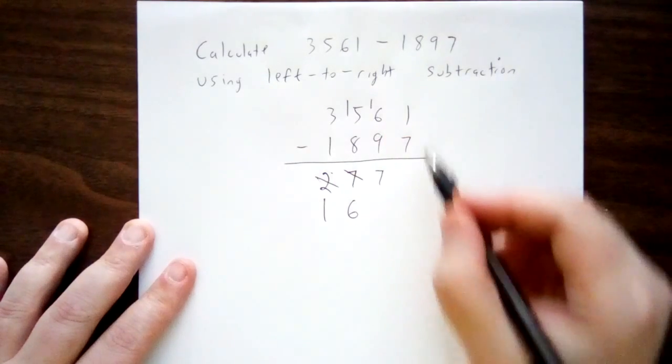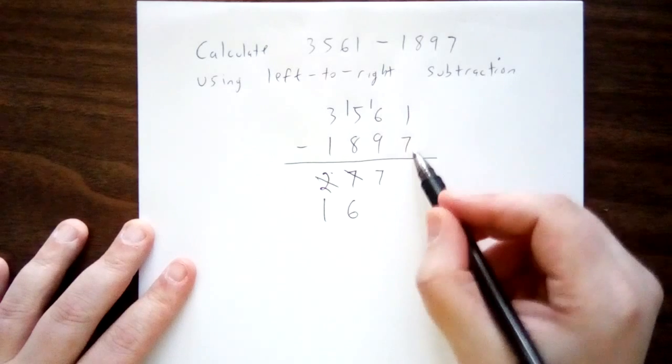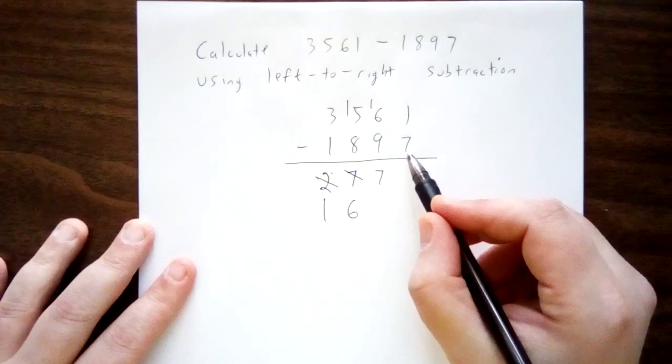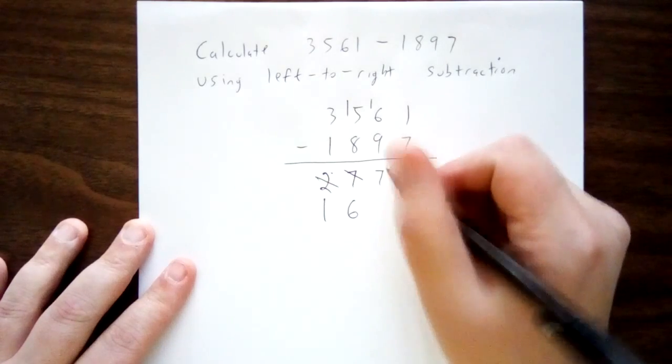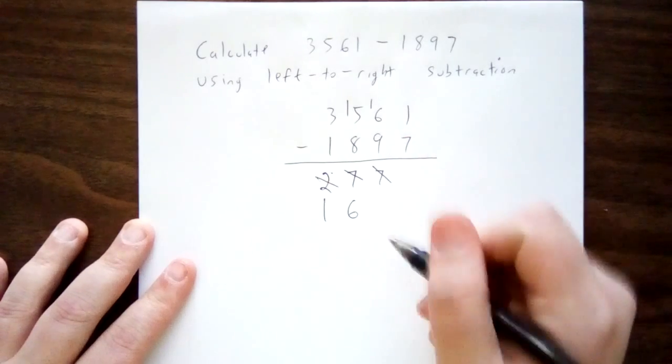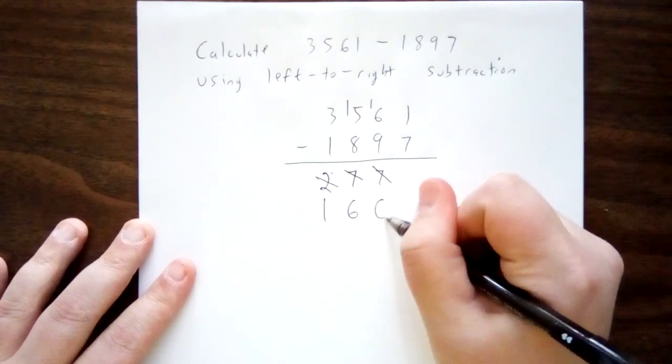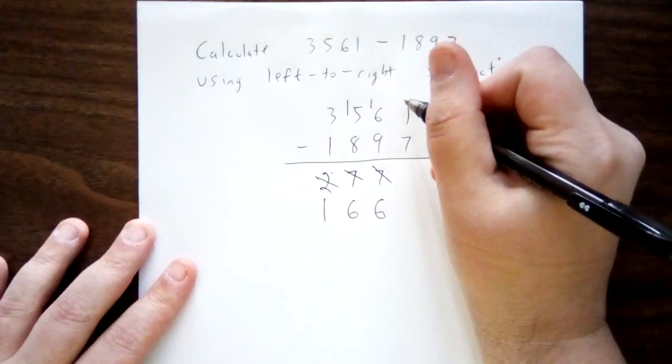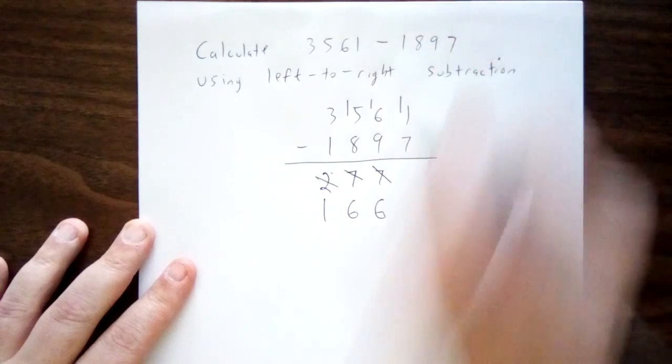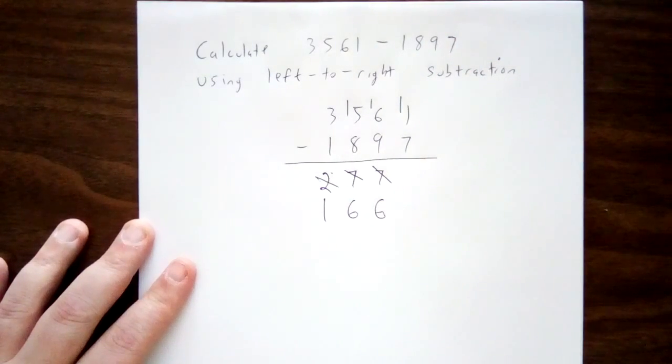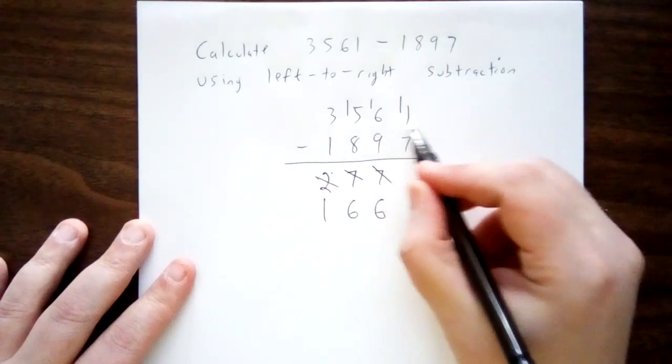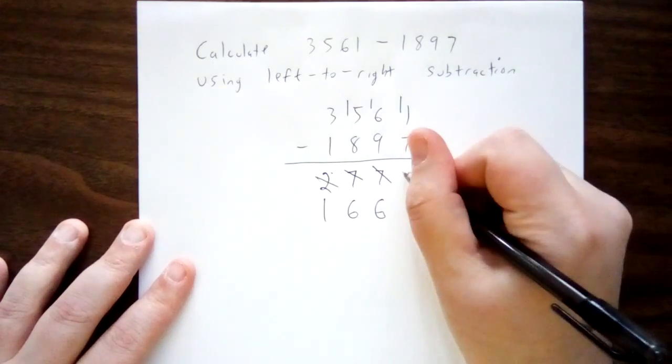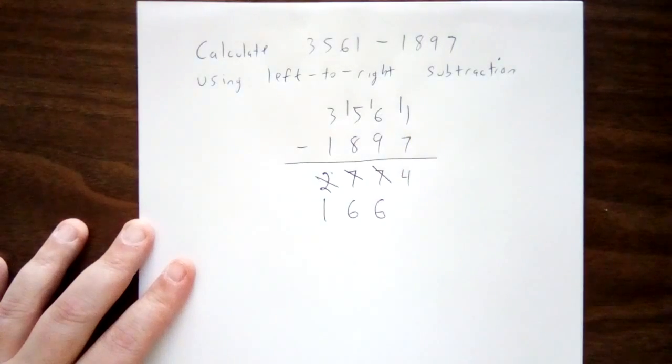And in the ones place, I have 1, and I'd like to remove 7. Again, I can't do that quite yet, so I'll need to borrow from the difference that I've already calculated. From the 7 tens that I have left over, I'll take 1 of them away, reducing it to 6 tens. That 1 ten that I've borrowed is worth 10 ones. So I add it on to the 1 that I already have, giving me 11 ones in total. And 11 ones, removing 7 of them, leaves 4 behind.